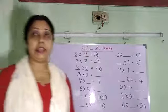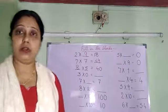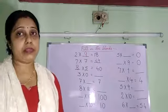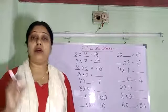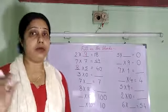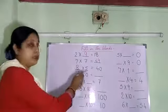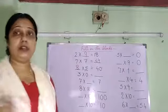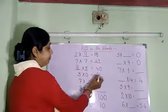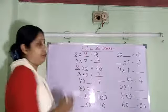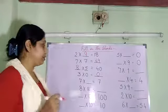We know that anything multiplied by 0 is 0. Always, if any number is multiplied by 0, the result comes 0. So here 3 into 0 — that means 3 0s are 0. Please remember this point.